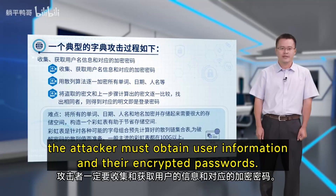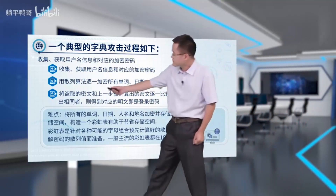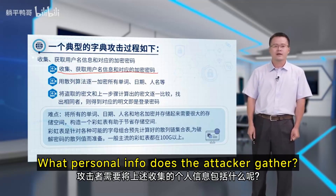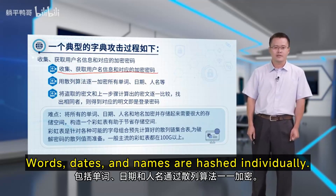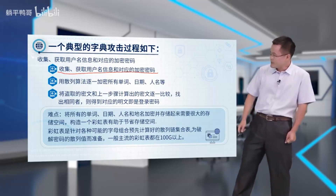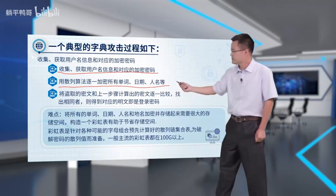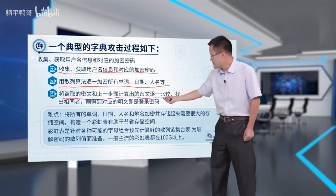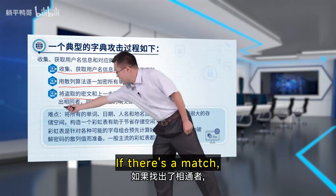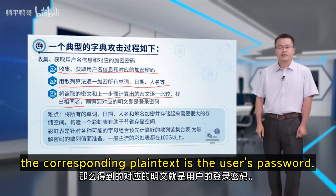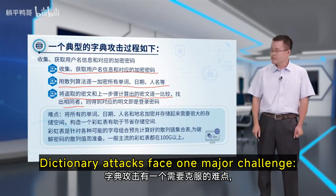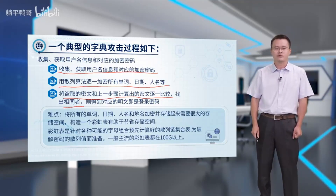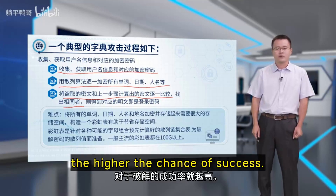First, the attacker must obtain user information and their encrypted passwords. The attacker gathers personal info — words, dates, and names — and hashes them individually. The attacker then compares the stolen hashes with the generated ones. If there's a match, the corresponding plain text is the user's password. The more data the attacker gathers, the higher the chance of success.